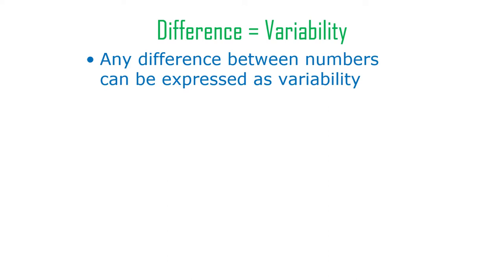The standard deviation and the variance — the core of those formulas is just the differences between each score and the mean of that score, and the mean comes from the scores. So it's just a different way of measuring the overall, roughly average, differences between all the different values. Any difference between any numbers can be expressed as variability, even if there are only two numbers.